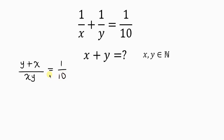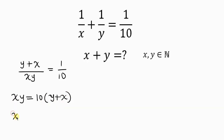Now let's cross multiply: xy times 1 is xy, equal to 10 times (y + x). Opening up the brackets: xy equals 10y plus 10x.